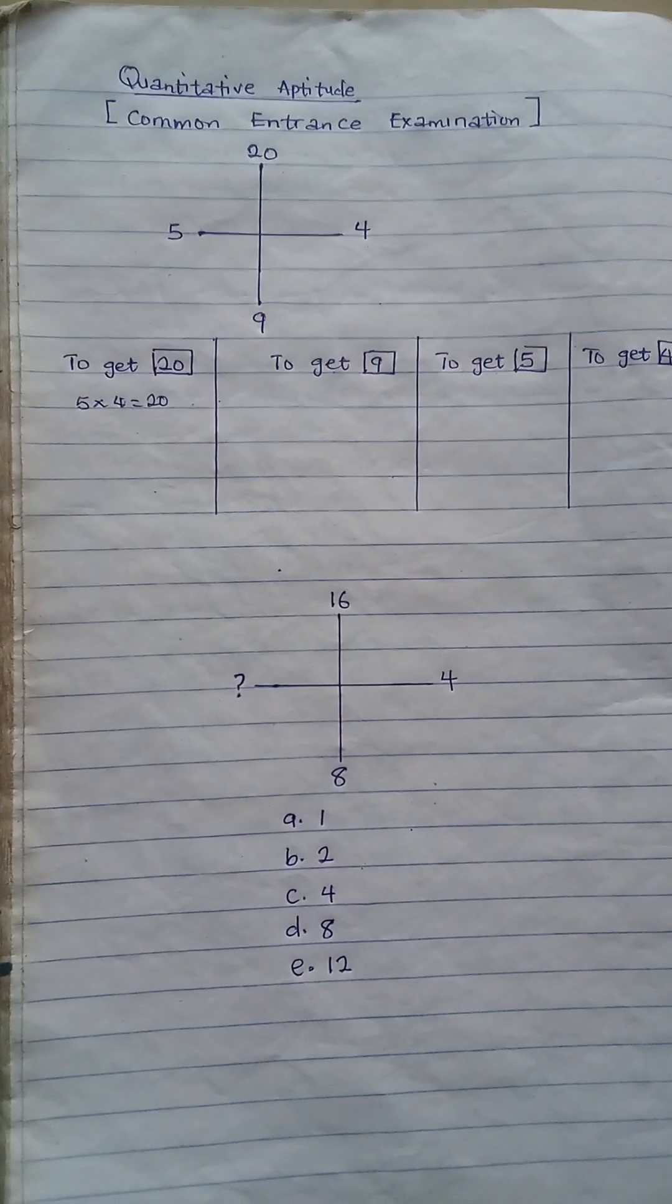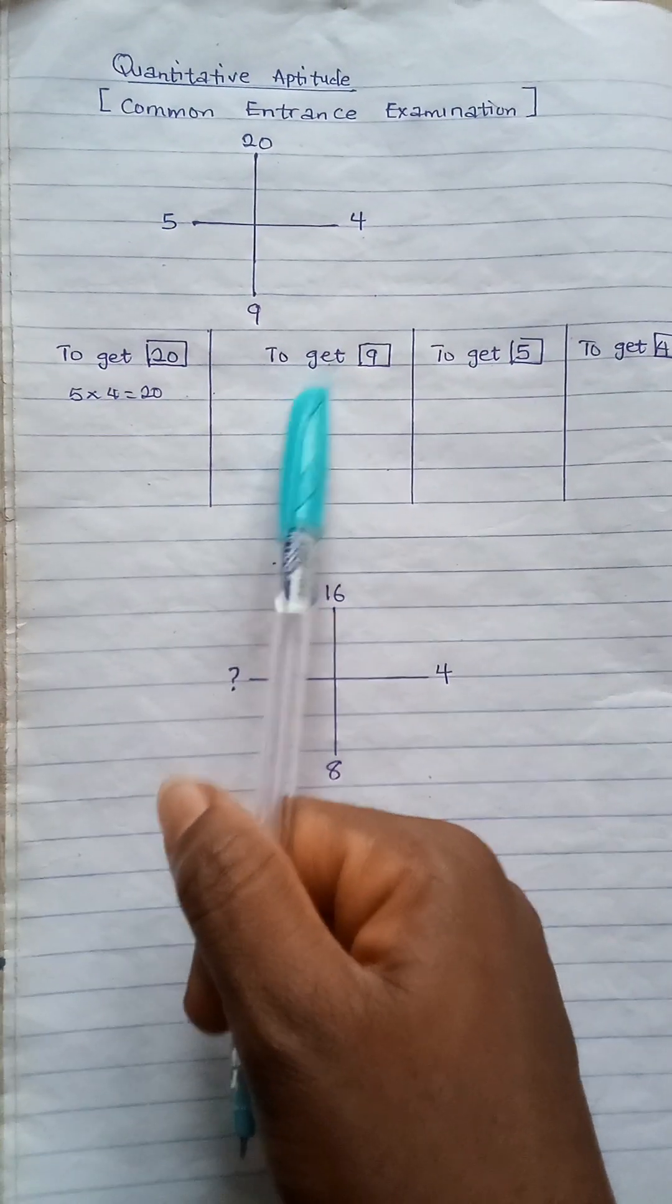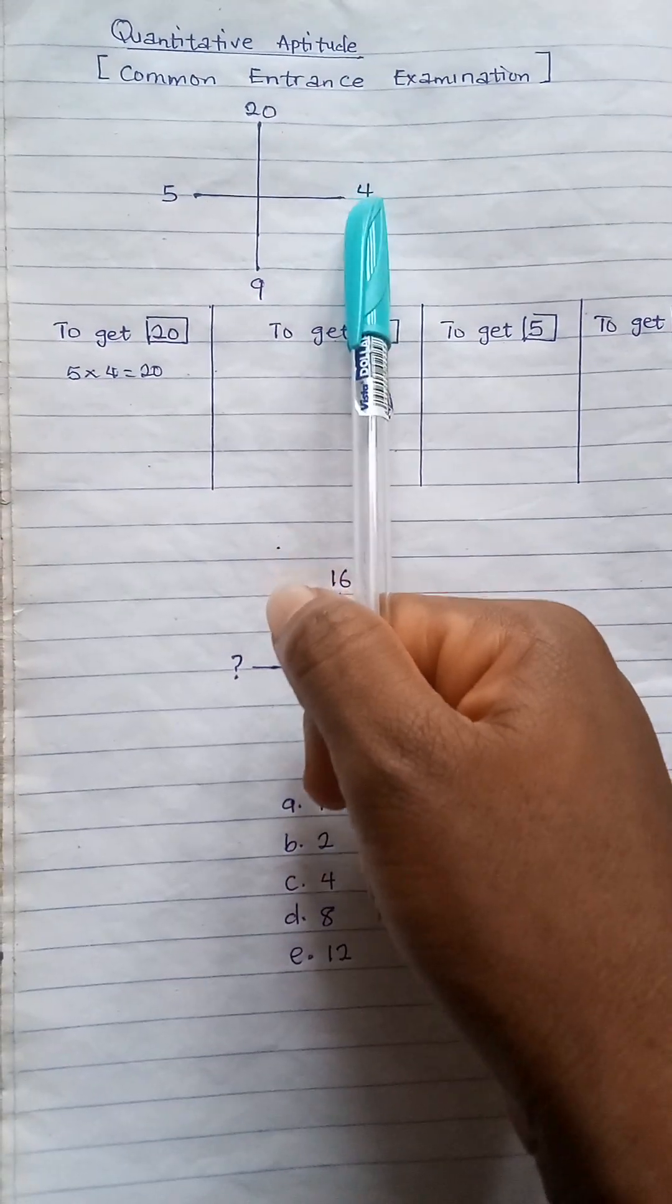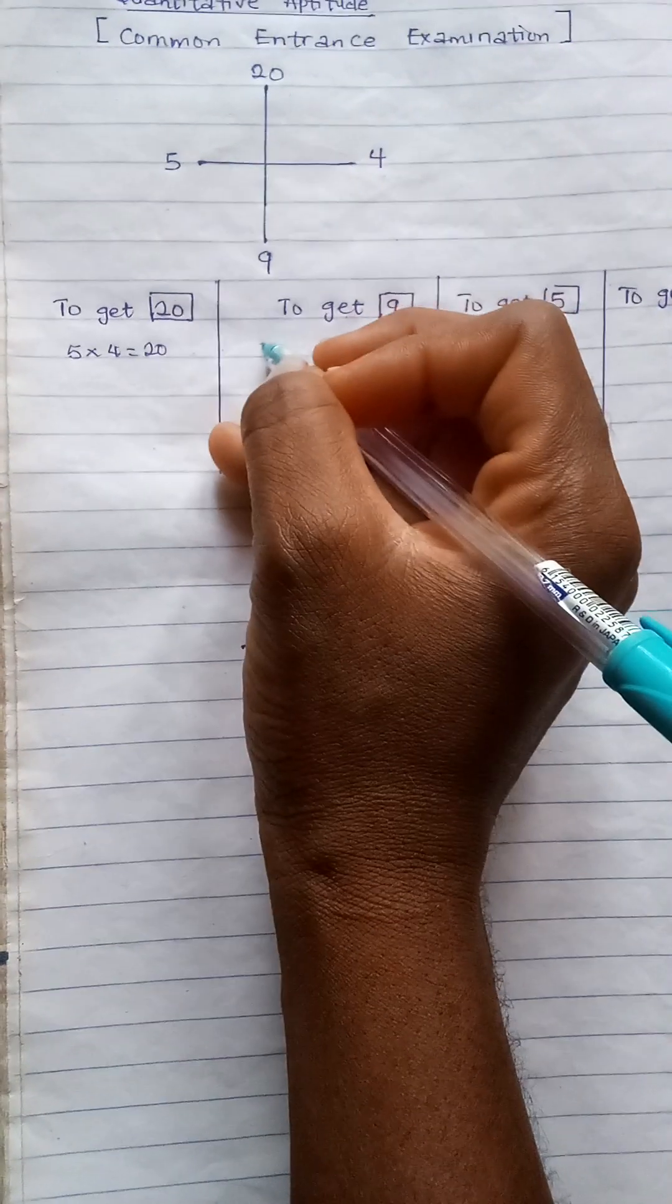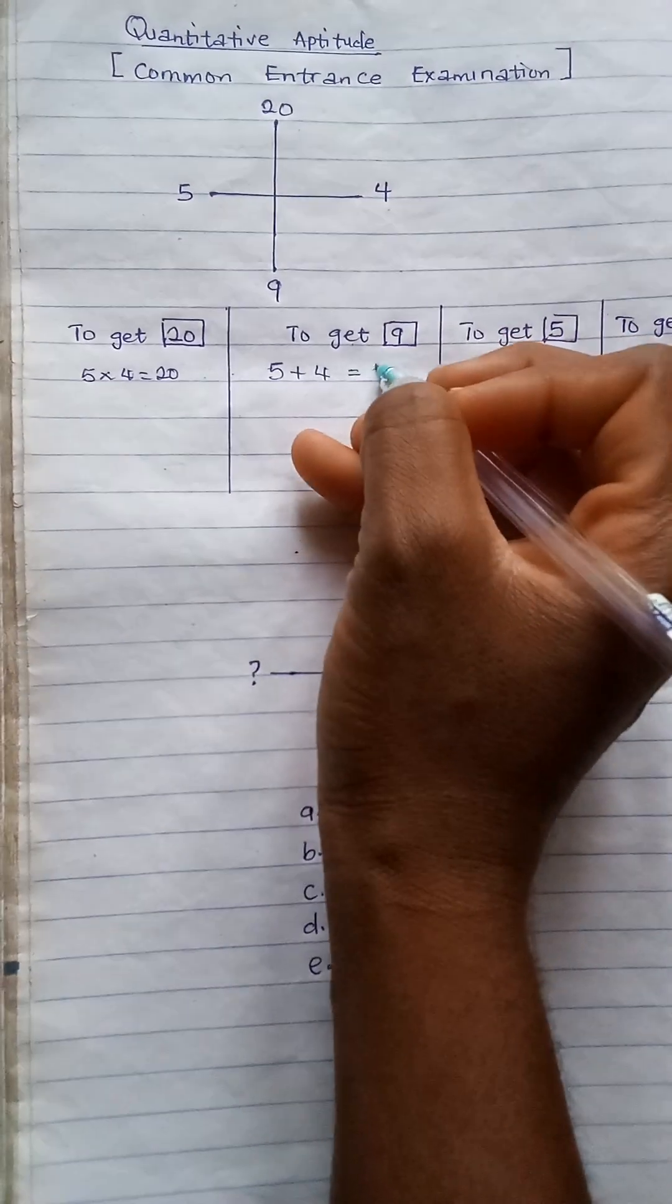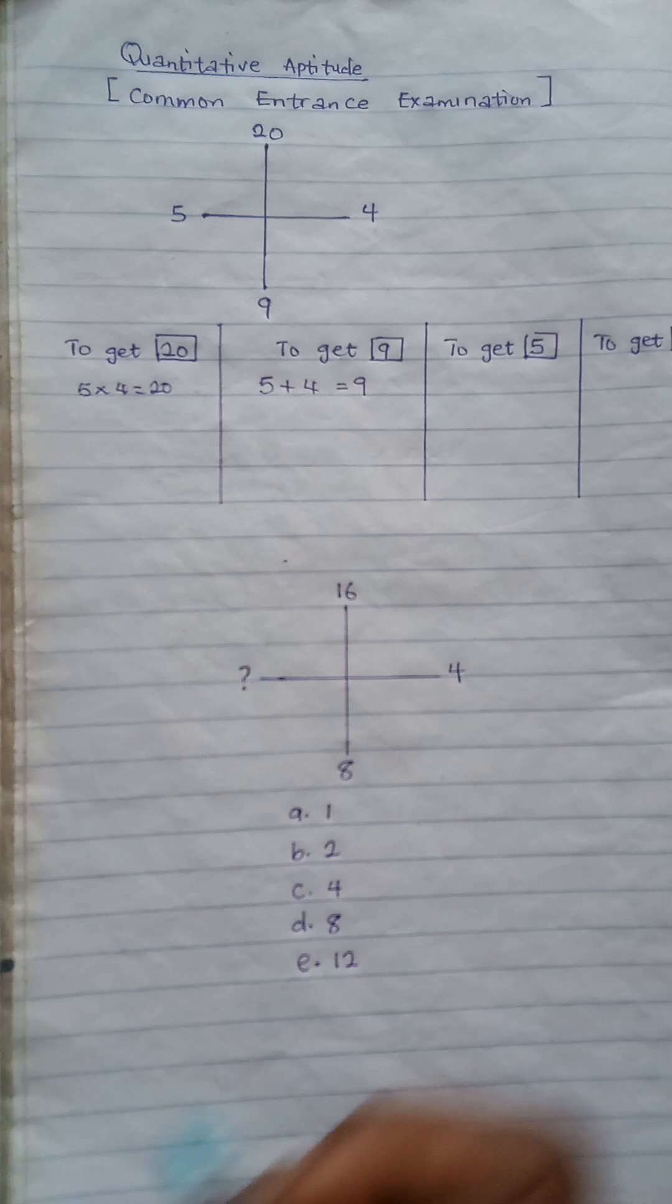Now to get 9, what do I need to do? I'll still be working with 5 and 4, so I'll simply say 5 plus 4 will give me 9. And that is how you get 9.